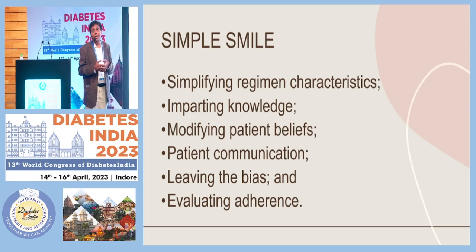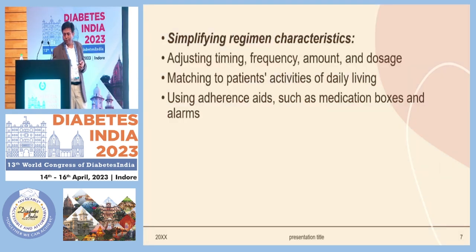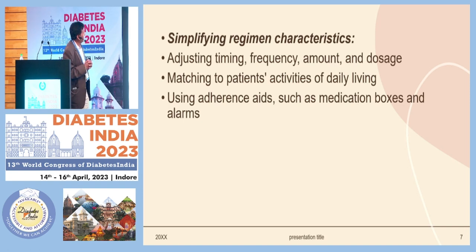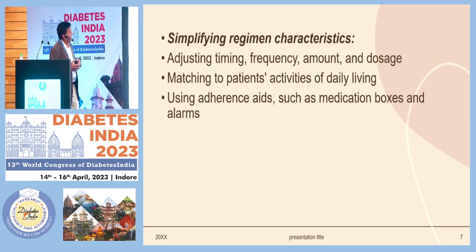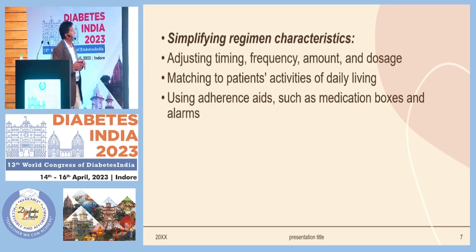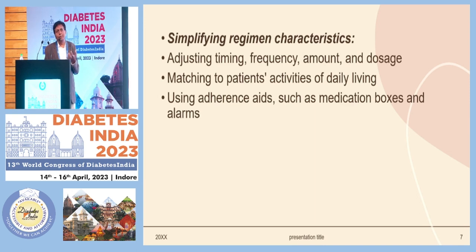Simplifying the regimen characteristics involves adjusting timing, frequency, amount, and dosage. Some of my patients go very early in the morning to the fields to work as laborers, so we have to adjust their treatment and diet accordingly. We must match treatment to the patient's activities of daily living and use adherence aids such as medication boxes and alarms to help them remember to take medication.